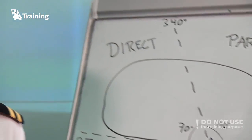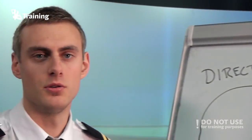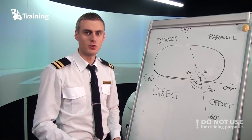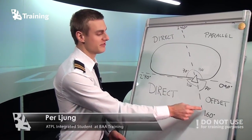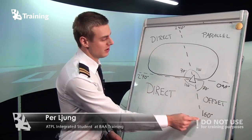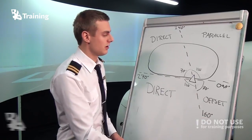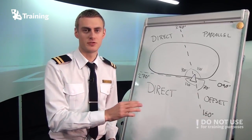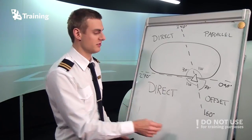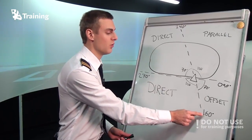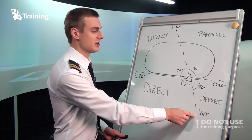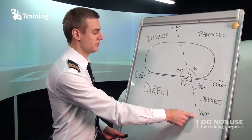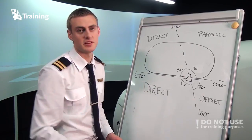Now we will talk more about how the different entries look. If we are plus or minus five degrees of a sector boundary, we have a freedom of choice. So for example, if we are at 163 degrees, we can choose if we want to use the direct entry or the offset entry.